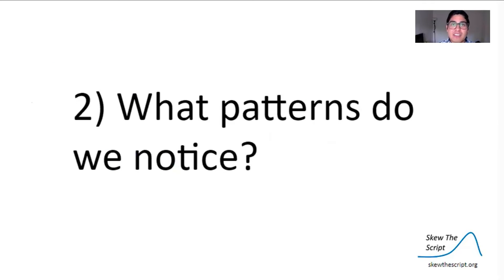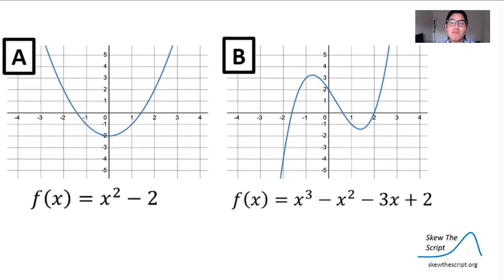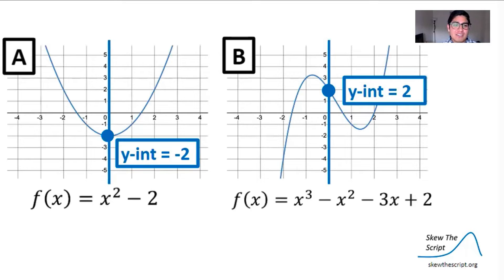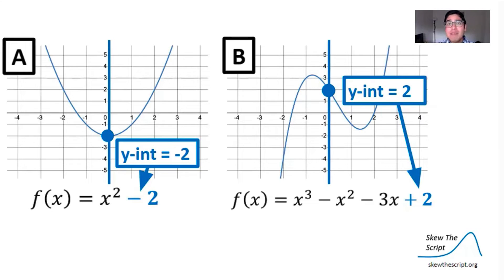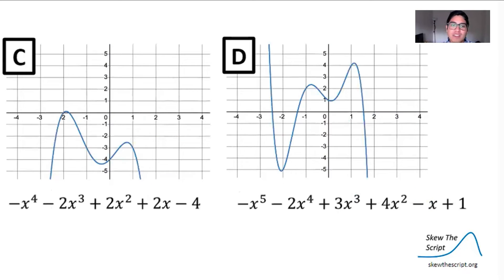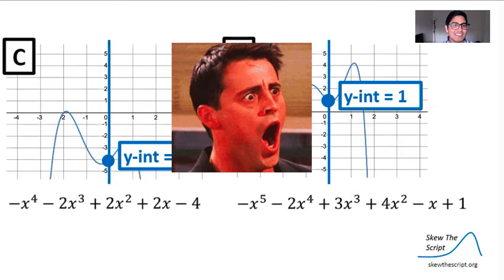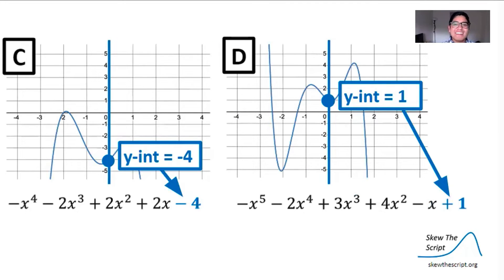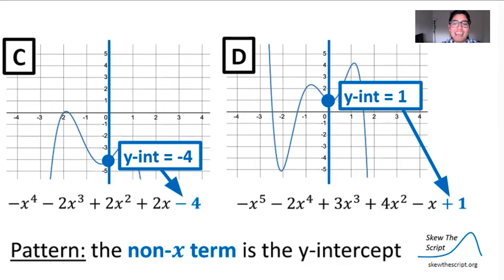What patterns do you notice in the four problems we just encountered? Pause the video and see. When I look at 1a and 1b and focus on the y-intercepts, I notice that both y-intercepts actually showed up in our polynomial equations. The y-intercept in part a was negative 2, and the constant term in the equation was negative 2 — same idea for 1b. This pattern holds for 1c and 1d as well. The non-x term in our polynomial equations turns out to be the y-intercept.